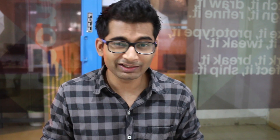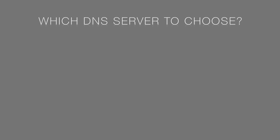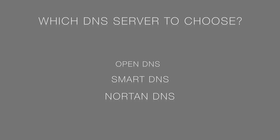As you can see, it's really important to know how you can change the DNS server of your devices so that you have more control over what you see. Which DNS you want to use depends entirely on you. If you want to monitor what others are browsing on your network, use OpenDNS. To access geo-blocked websites like Netflix and Hulu, use SmartDNS. To block adult content on your network, use Norton DNS. And for reliability and speed, use Google DNS.